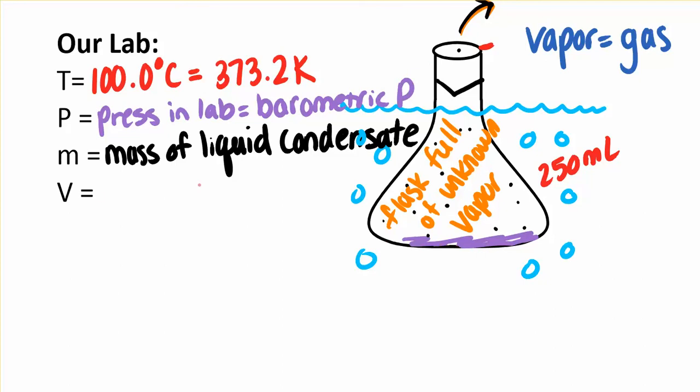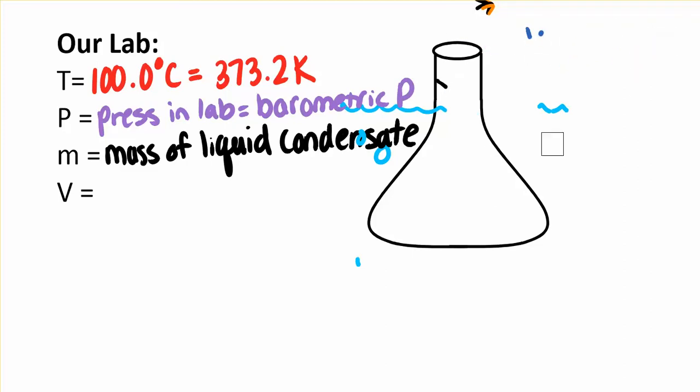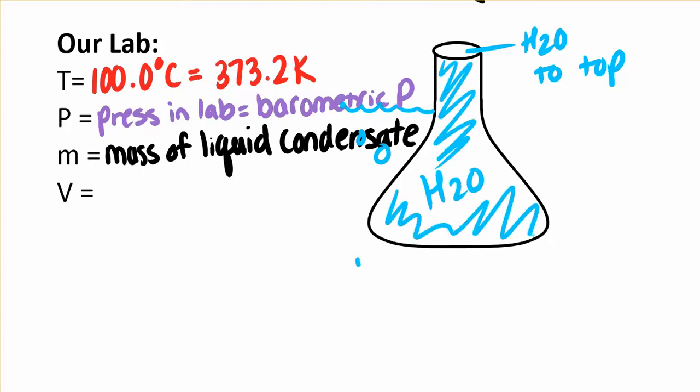And so after we do our two trials, we'll do it twice, where we add the unknown, vaporize it, heat it for 10 minutes, cool it, weigh it. Then we'll dump that into the waste container. We'll add more unknown, heat it, cool it, weigh it, dump it to the waste container. We'll do that twice, two trials. Then we'll add water. So this is a different step. Then we'll just add water to our flask. And when you add your water to the flask, you want to add water up to the very top. You want that water to occupy the entire space of your flask.